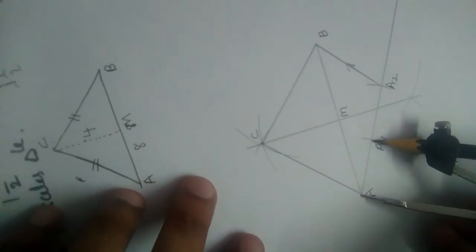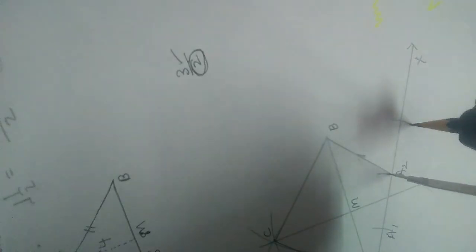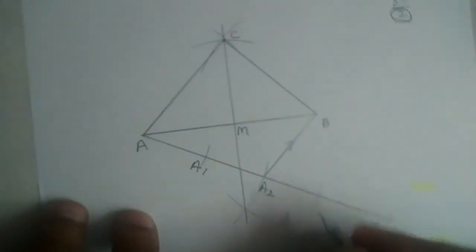So I did not change this radius. Now from A2, let me draw one more arc here. So let us name it A3 now.